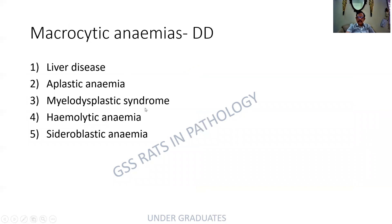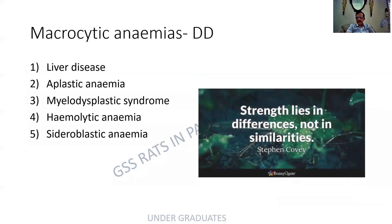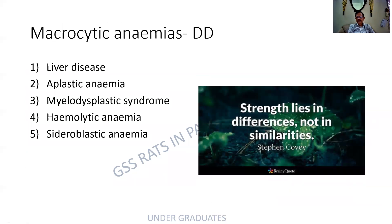Macrocytosis can occur in a number of conditions: liver disease, aplasia, myelodysplasia, hemolytic anemia, and sideroblastic anemia. So this is the differential diagnosis for macrocytosis.